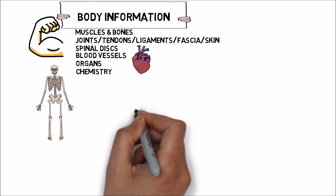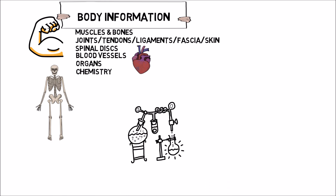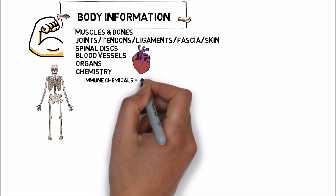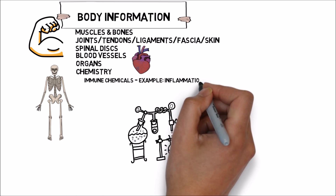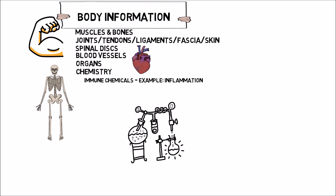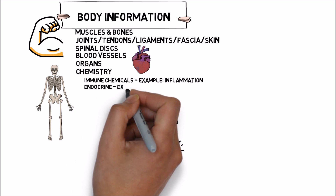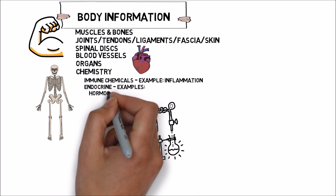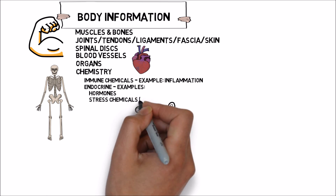Chemistry is an interesting one. Some of the chemicals you may have heard of include immune chemicals, such as the ones which fight infection and help healing — commonly these are seen as inflammation. Chemistry also includes your endocrine system, which is a fancy word for a system that regulates hormones and stress chemicals, such as adrenaline or cortisol.